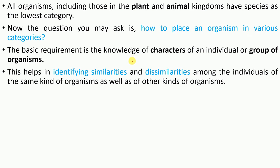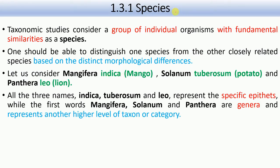So how will you classify or identify an animal or plant? You need some characters — similarities and dissimilarities — on the basis of which you will classify things. Let's move on to the first category: species.